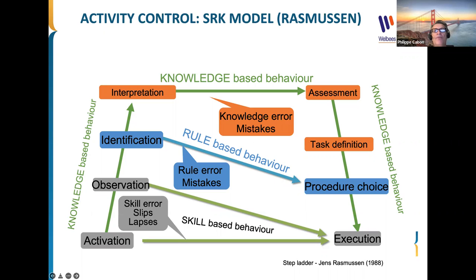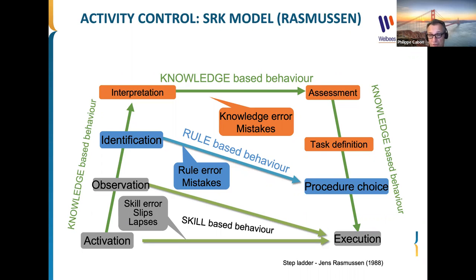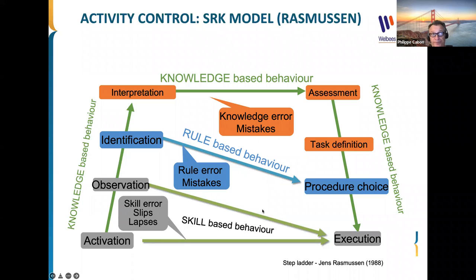At the skill-based level we can have slips or lapses — not executing the right actions, or an omission of actions. At the rule level, rule errors mean not using the right rule for the situation. At the knowledge level, knowledge errors mean not applying appropriate knowledge. This model describes all possible errors, and is frequently used in investigation to understand why people made errors. The management approach differs across these three levels.